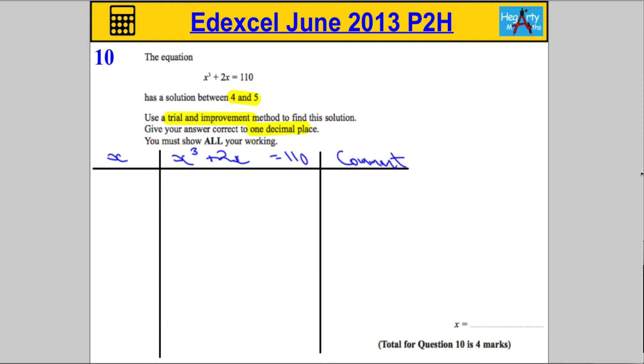First place to start is it gives us a bit of information. It says that we've got a solution between 4 and 5. Common sense should tell you that if I'm going to pick anywhere to start, start immediately at 4.5. That should get rid of half the bad answers.